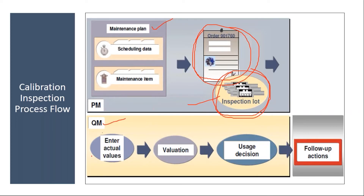Once the inspection lot gets generated, in the QM module they will do the calibration — they will enter the calibration results in the lot, do the valuation, and finally do the usage decision. In the usage decision they mention whether that equipment can be used or not, whether it is usable or has to be discontinued.